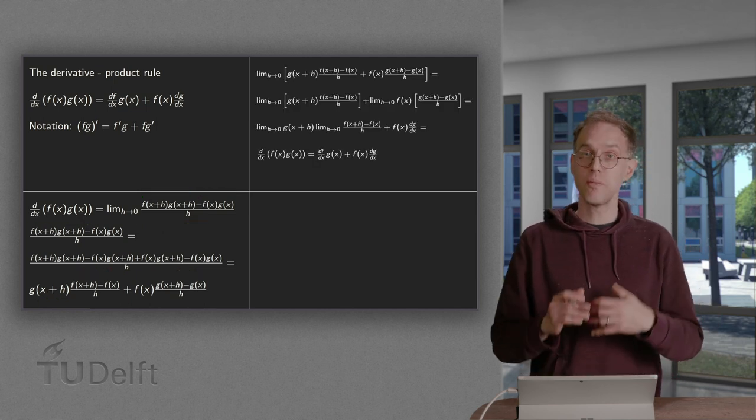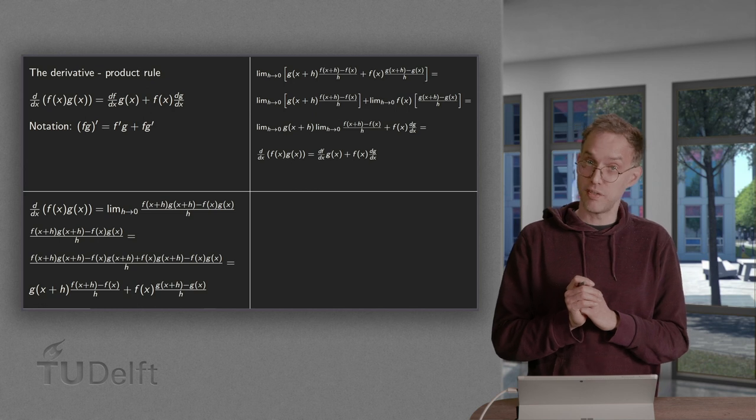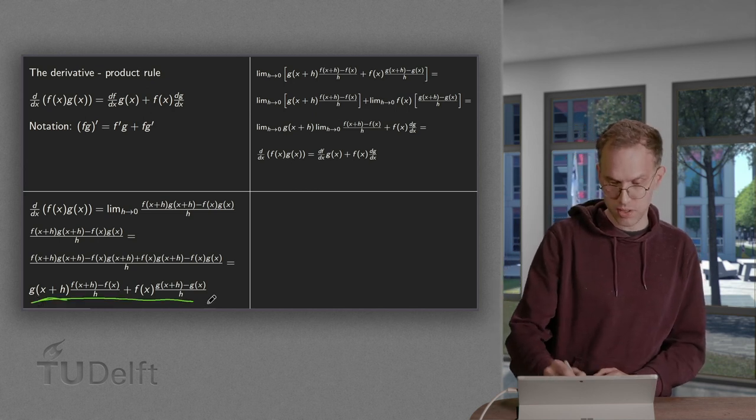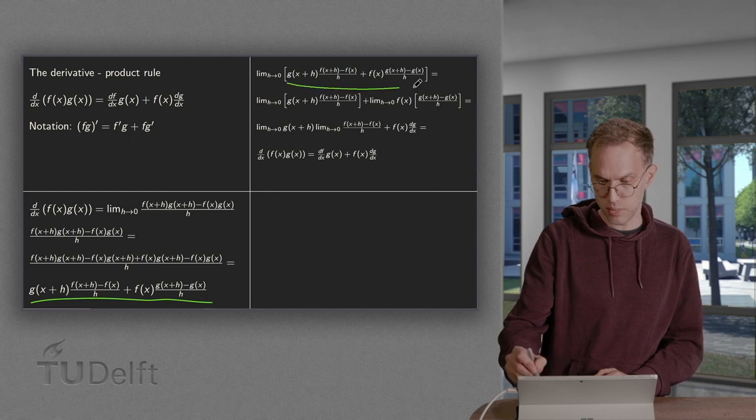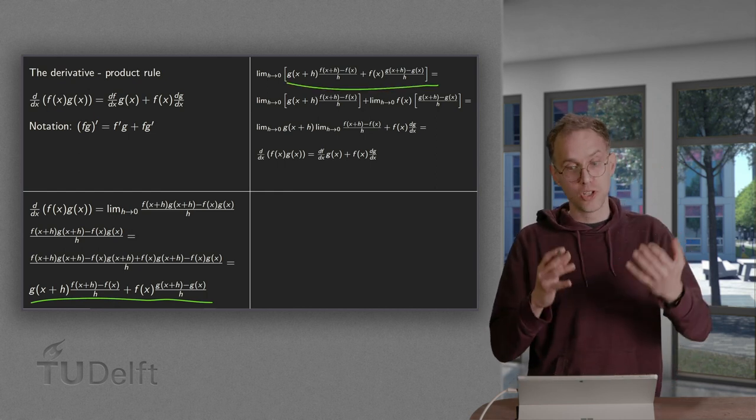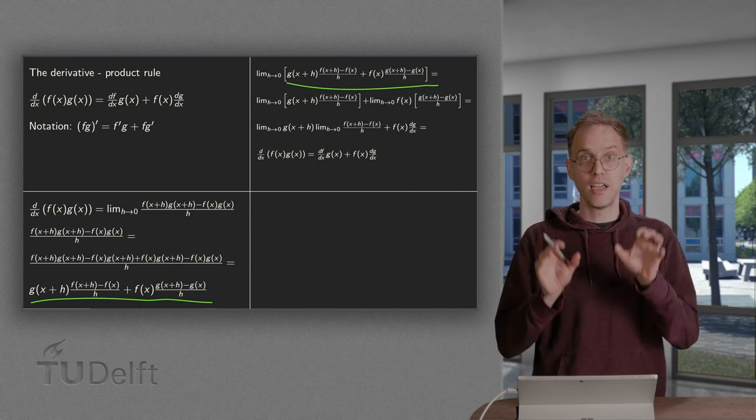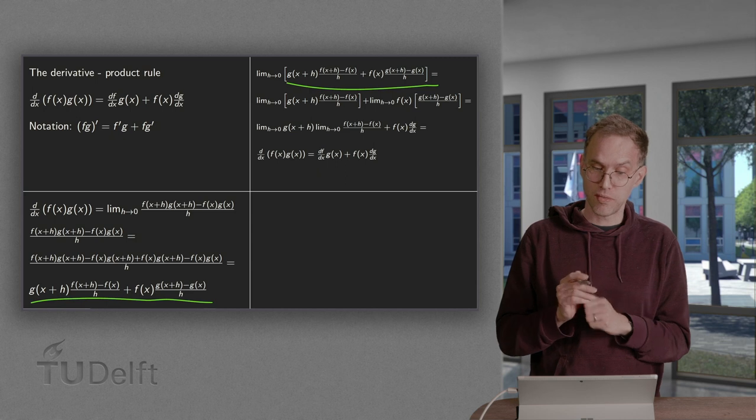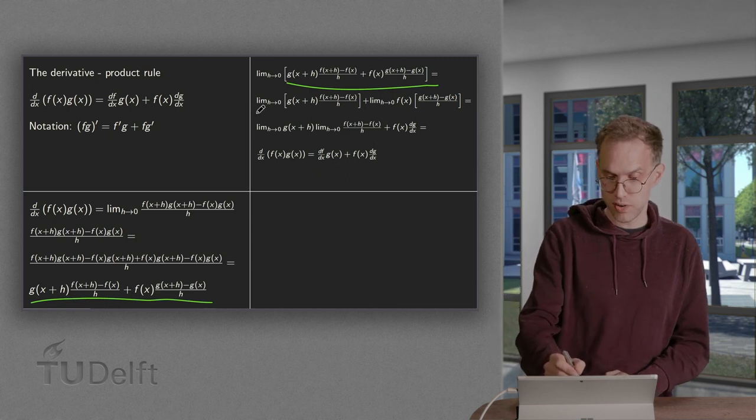Now if we do so, then in order to get our derivative we have to take the limit, so the limit of these terms goes over here. Then we again use the sum rule for limits. If both limits exist, then the limit of the sum equals the sum of the limits.